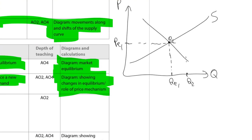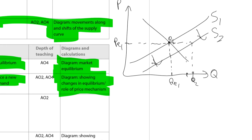If instead there's an increase in supply from S1 to S2, at the current price level there will be excess supply — quantity supplied exceeds quantity demanded: QS > QD. We call that a surplus — too much of something. When there's a surplus, suppliers decrease price. As price decreases, quantity demanded increases and quantity supplied decreases, bringing the market to a new lower equilibrium price.